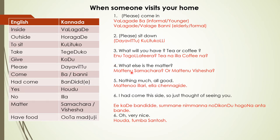Then, 'what else is the matter?' — Mathi noo samachara, or we say Mathi noo vishesha. When we speak it is a bit faster: Mathi noo samachara or Mathi noo vishesha. That is to draw the person into conversation. Then, 'nothing much, all good' — Mathi noo illa ri, Yalla channa gide, meaning everything is fine.